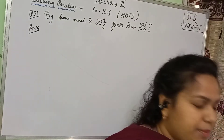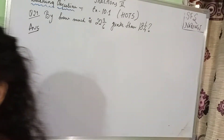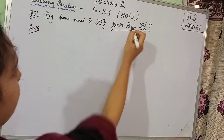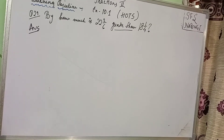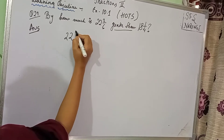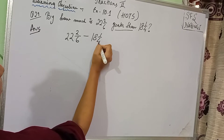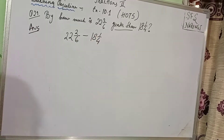In question number 21 of your workbook, children, if you will note, it is not very difficult. All you have to know is how much is 22 2/6 greater than 18 1/4. Since you have to find out how much is this number greater than this number, what do you do? You subtract. You take 22 2/6 minus 18 1/4.